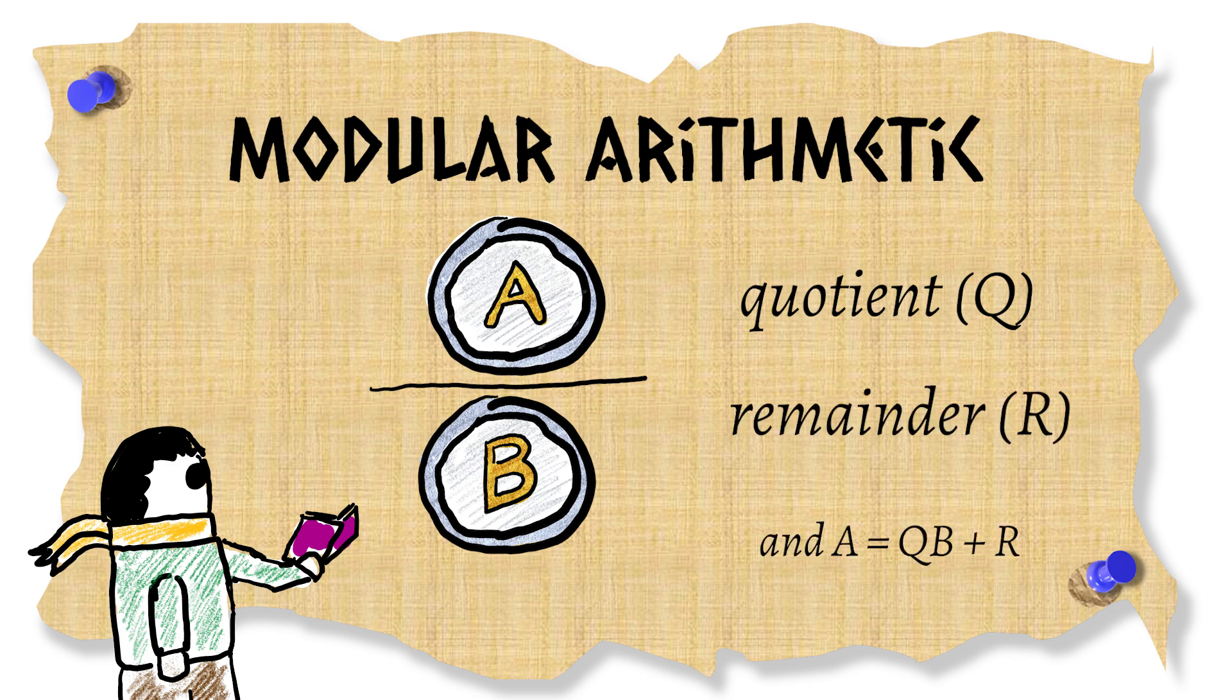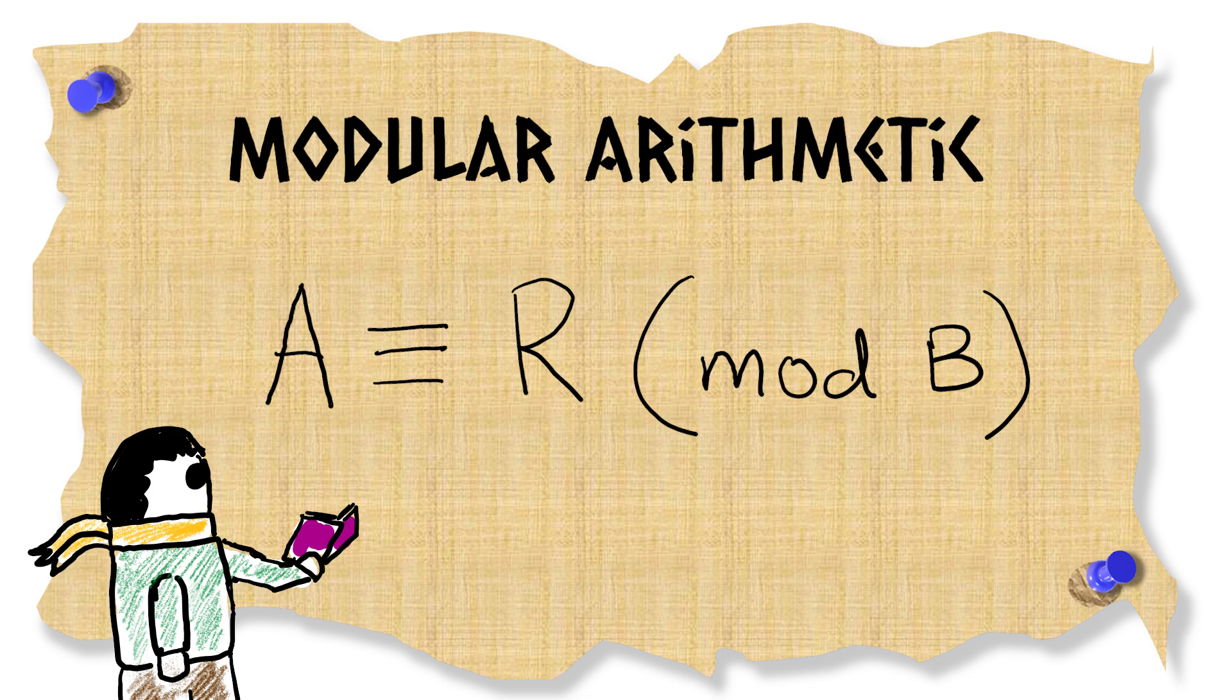When we divide a number A by B then we get a quotient and a remainder. If the remainder is R then we write it like this which we read out as A is congruent to R modulo B.